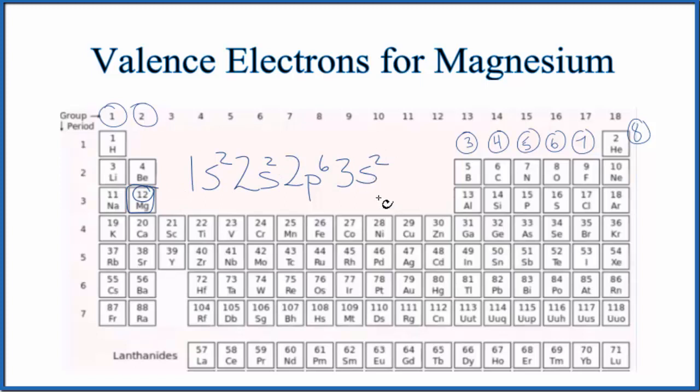But we're only interested in the valence electrons for magnesium. So we want the highest energy level. Think of it as the outer shell. And that's the third energy level here. Third energy level only has two valence electrons. And that's what we found before using the group number.